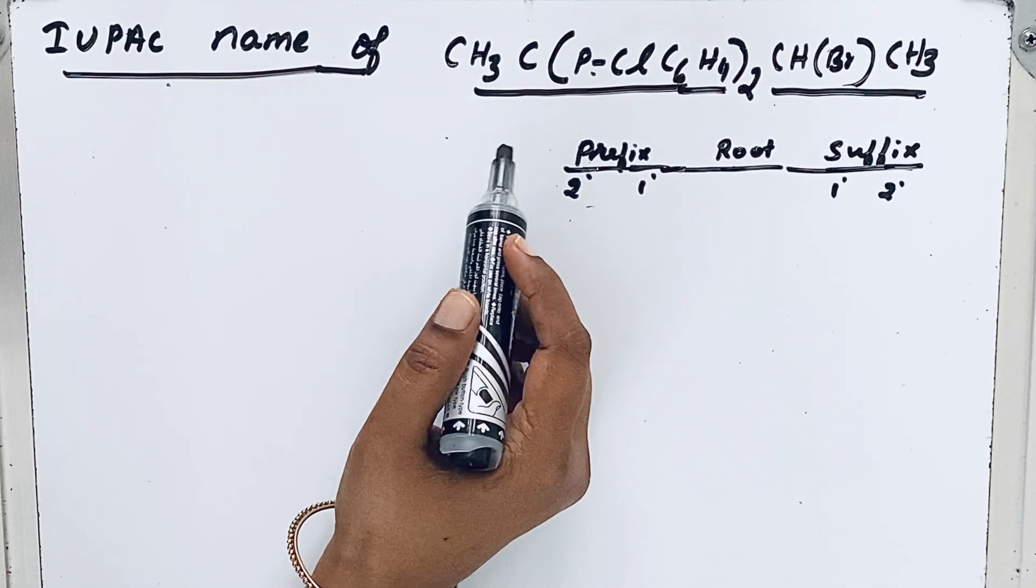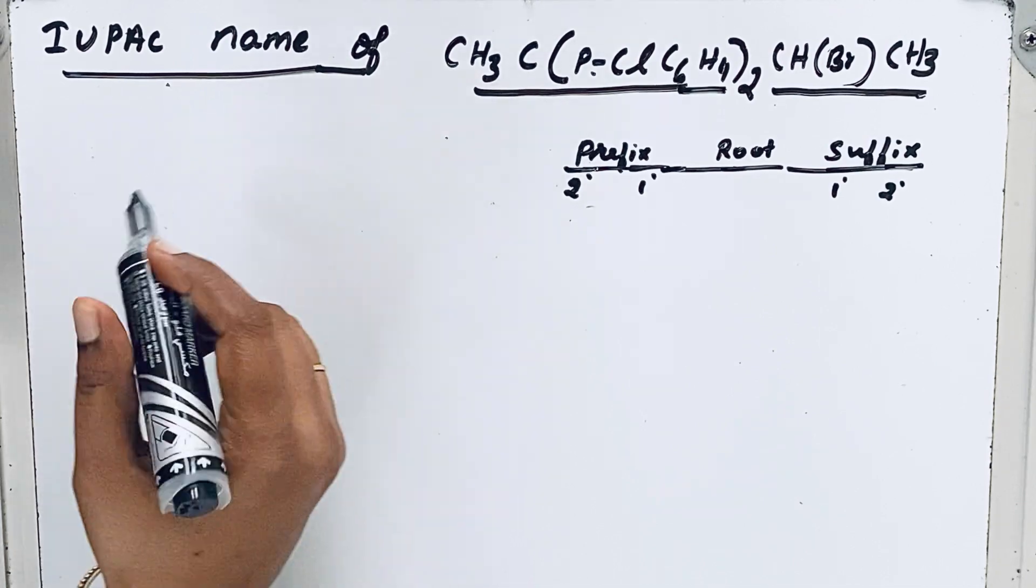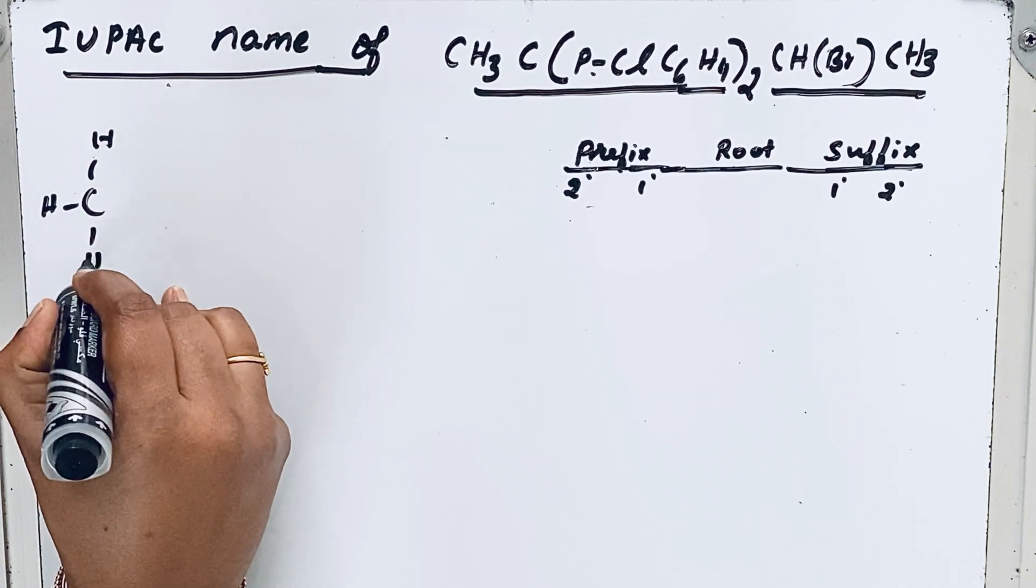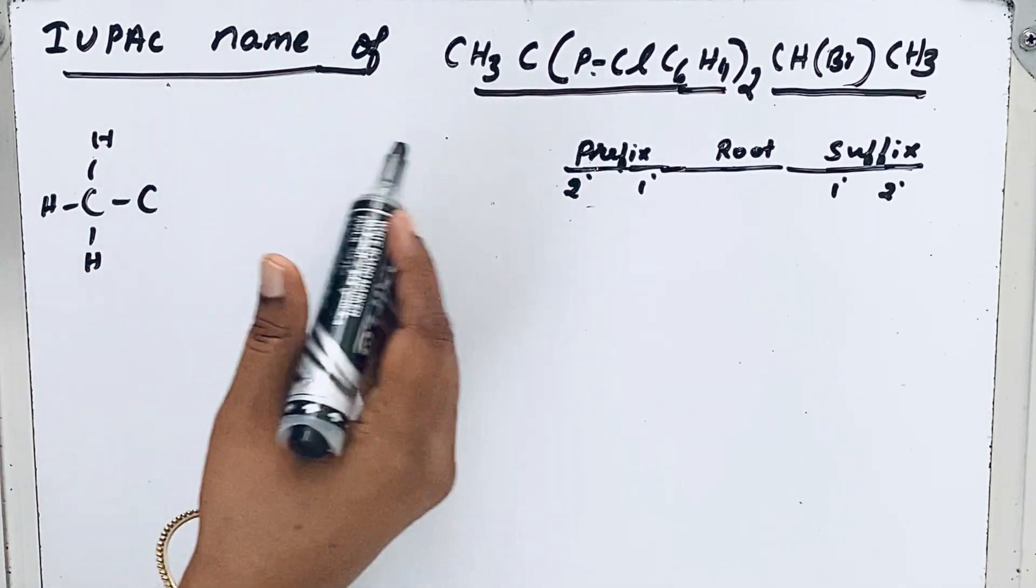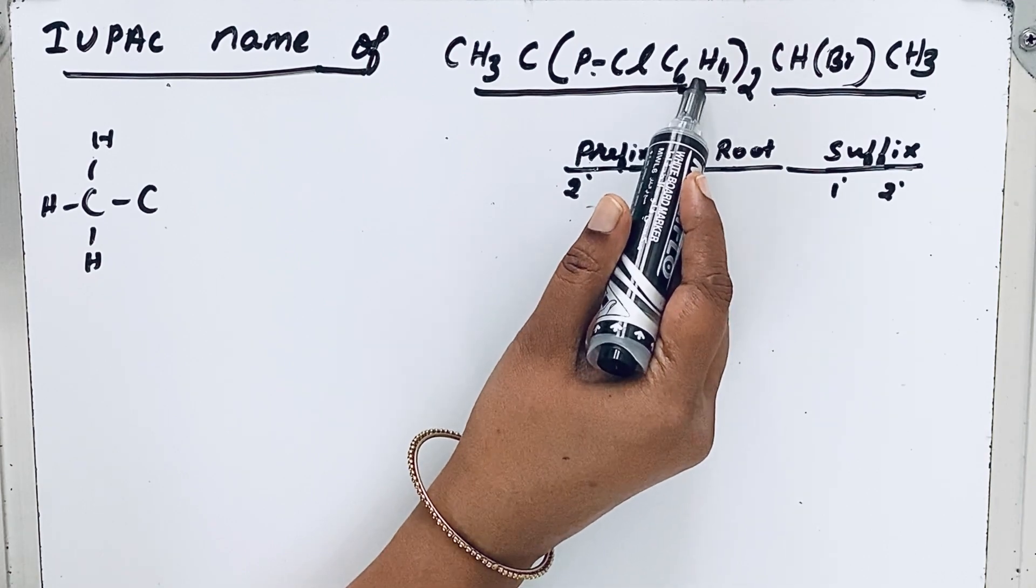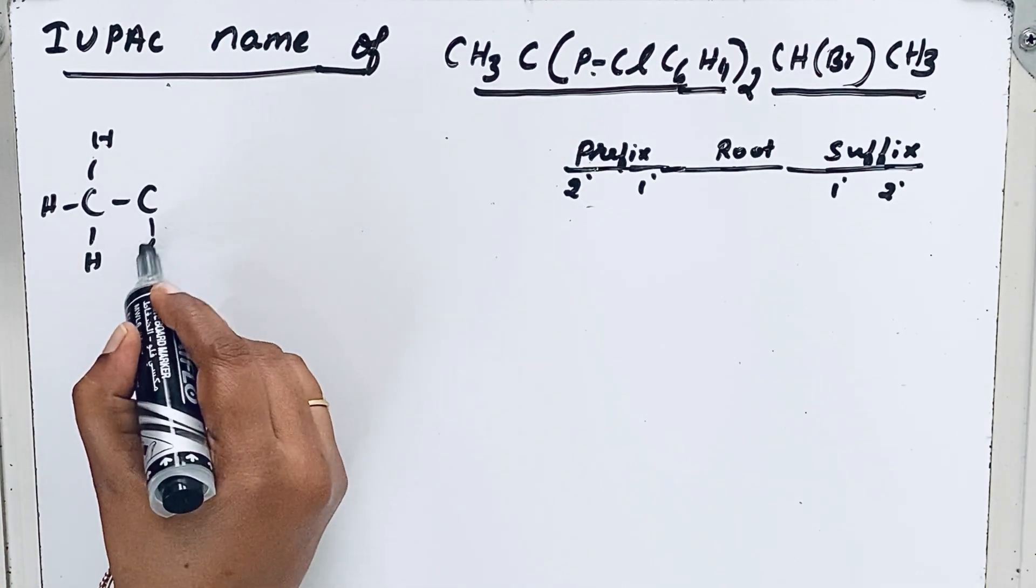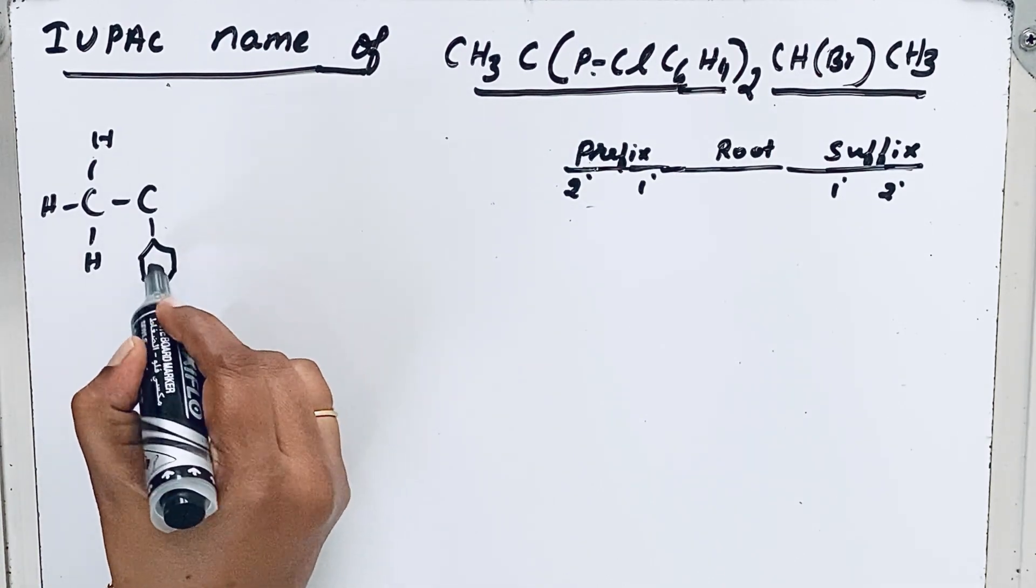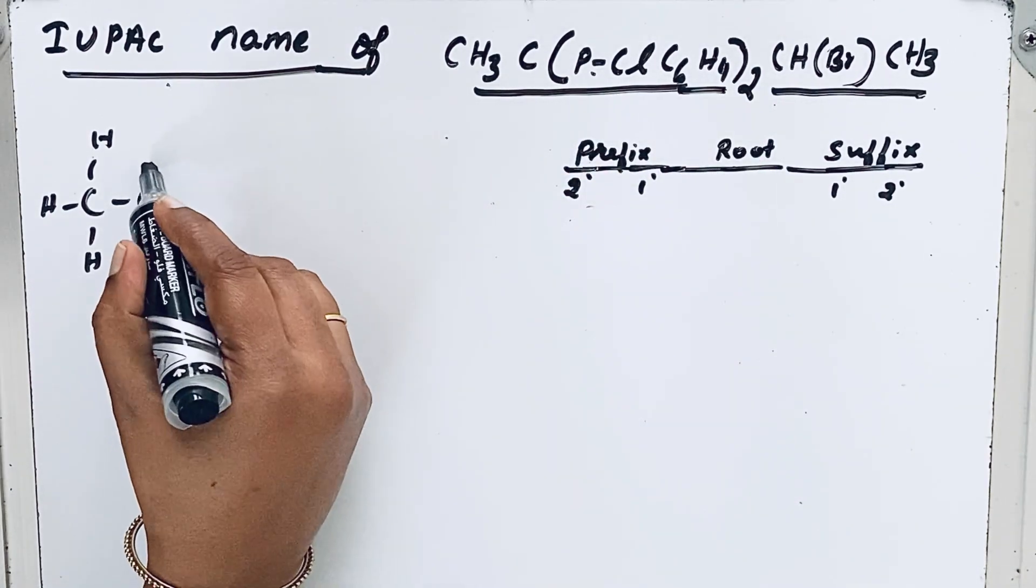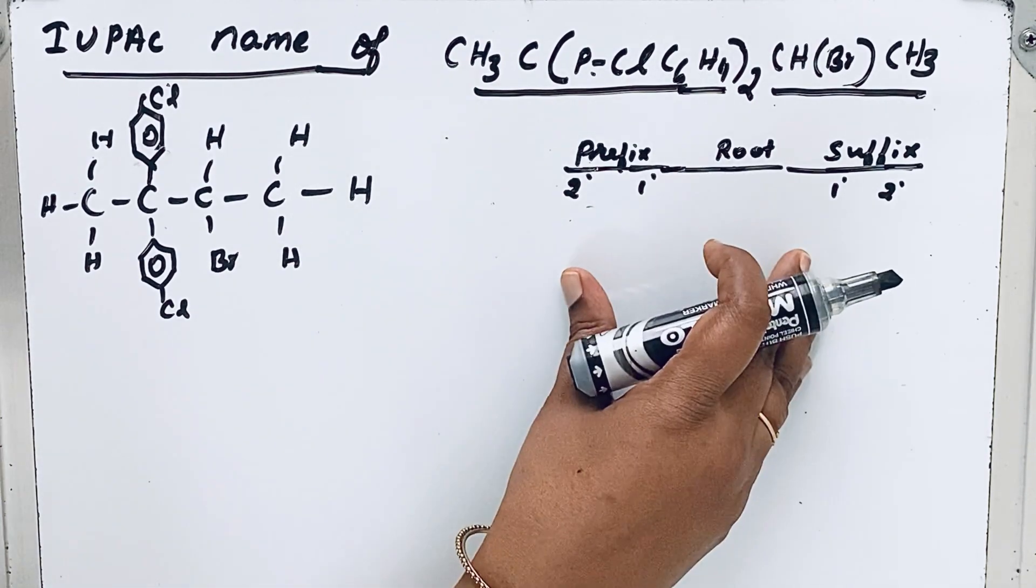We will see this question. First let us write that complete structural formula. So CH₃, then here C para, then ClC₆H₄ is a phenyl group. So in para position chlorine is attached. You can write the para position chlorine. So there are two of these complex groups present. This is the complete structural formula. Here is a format.